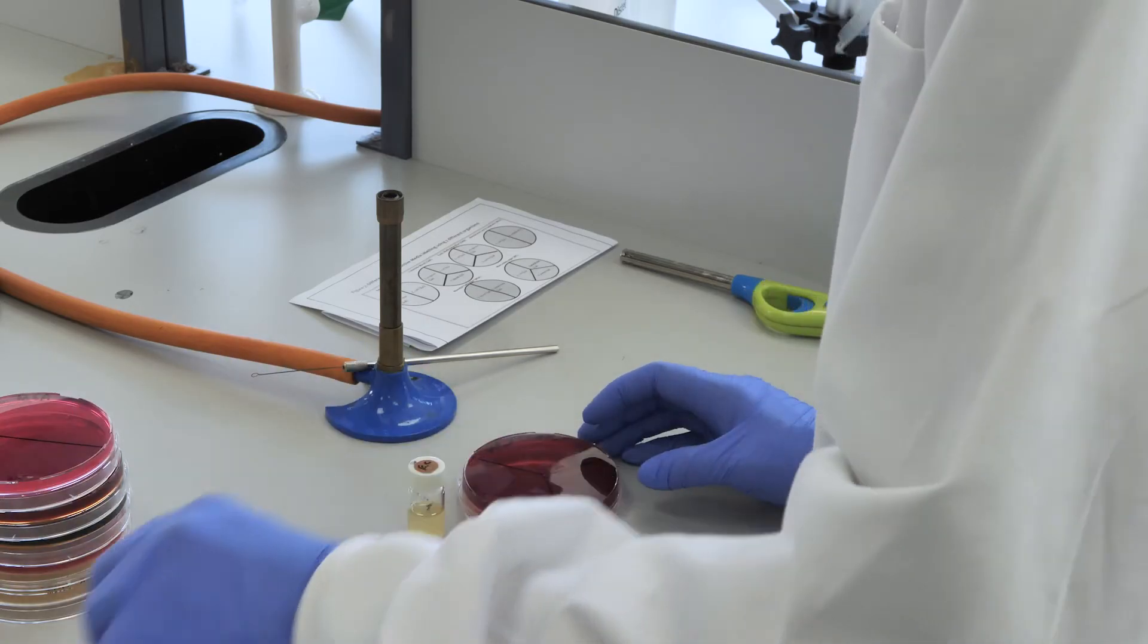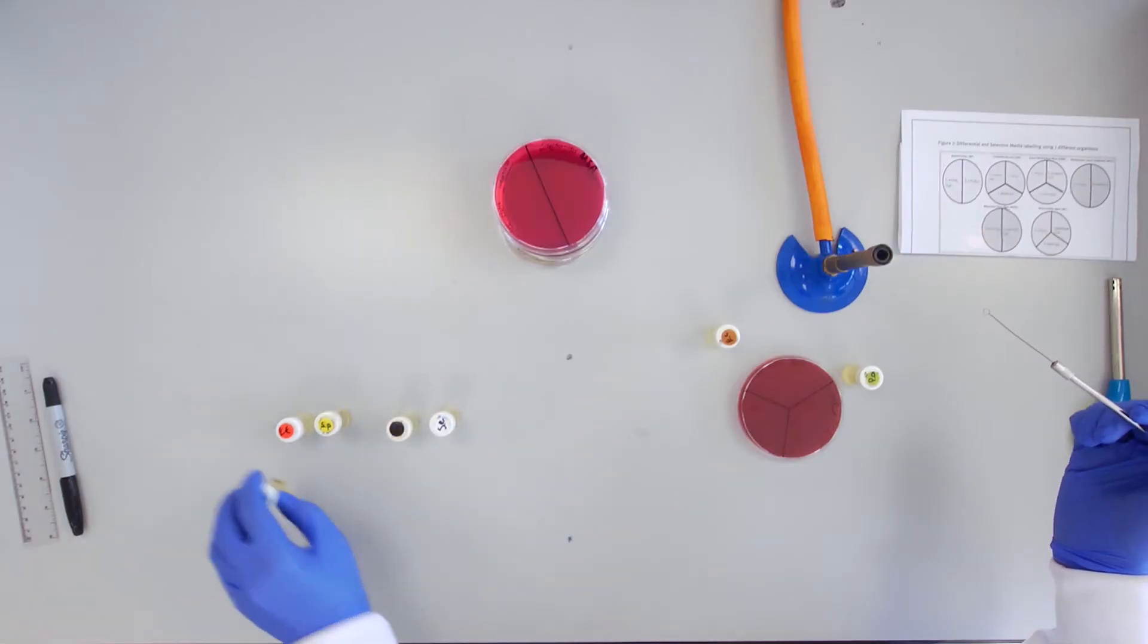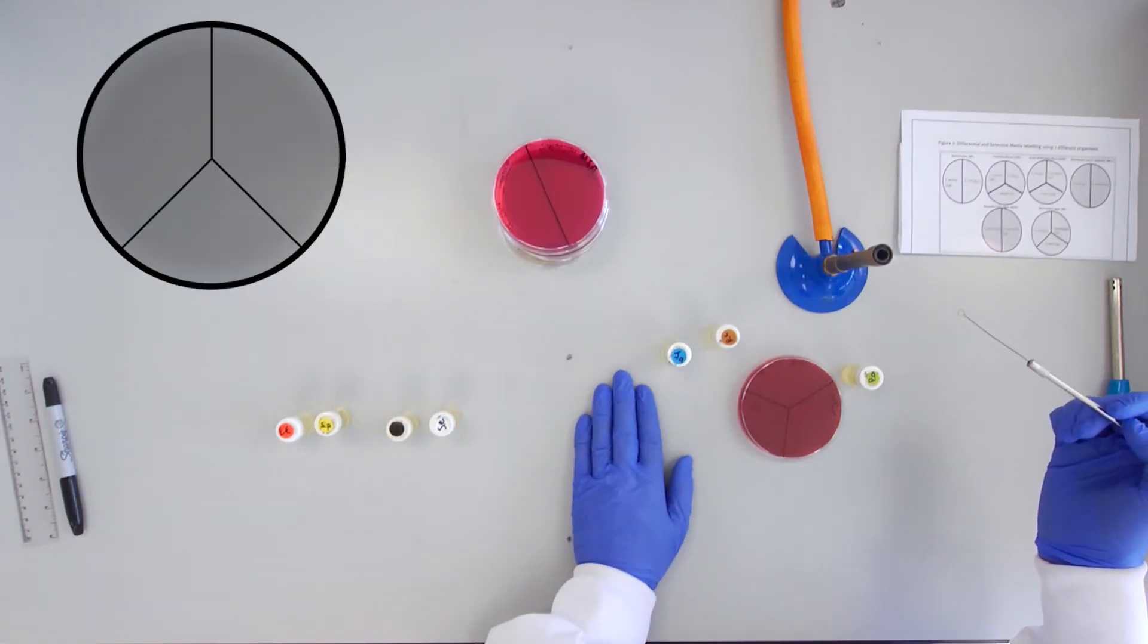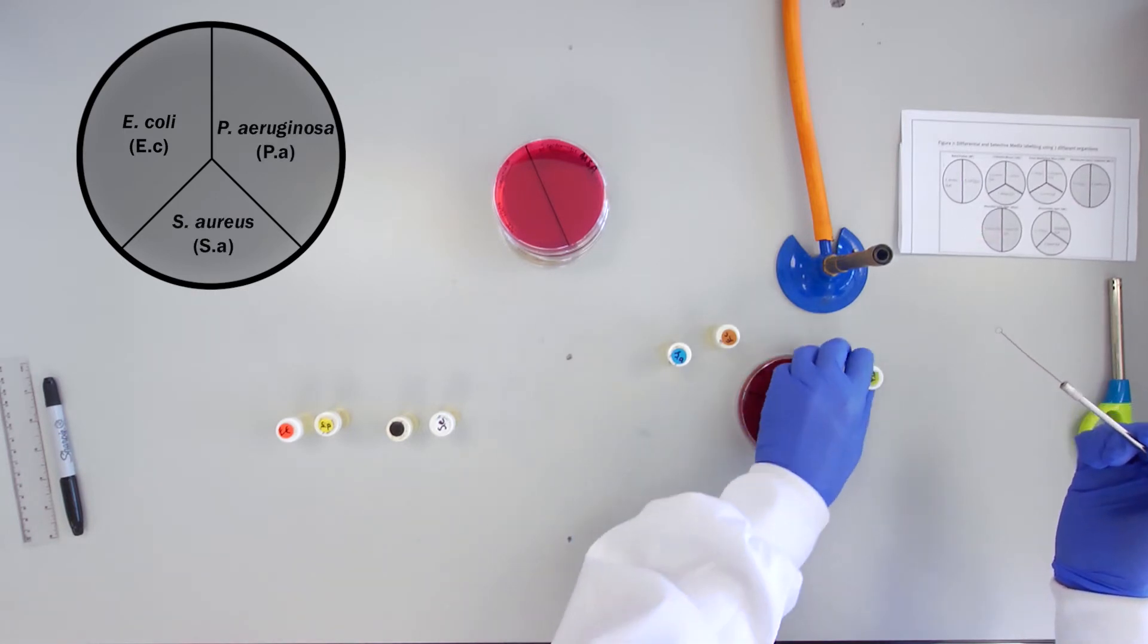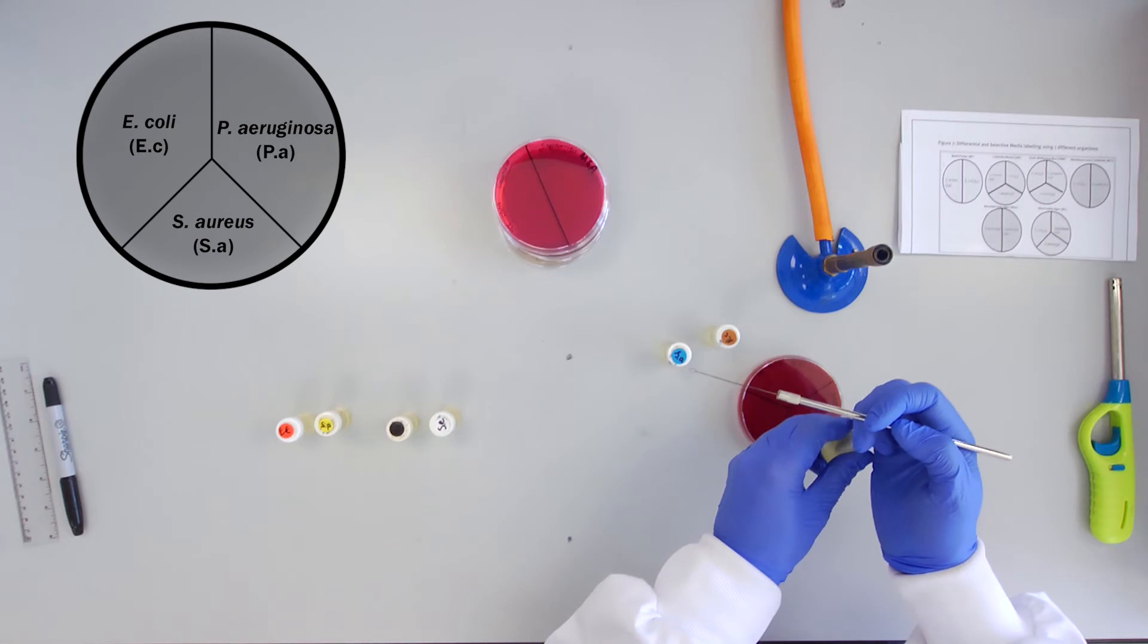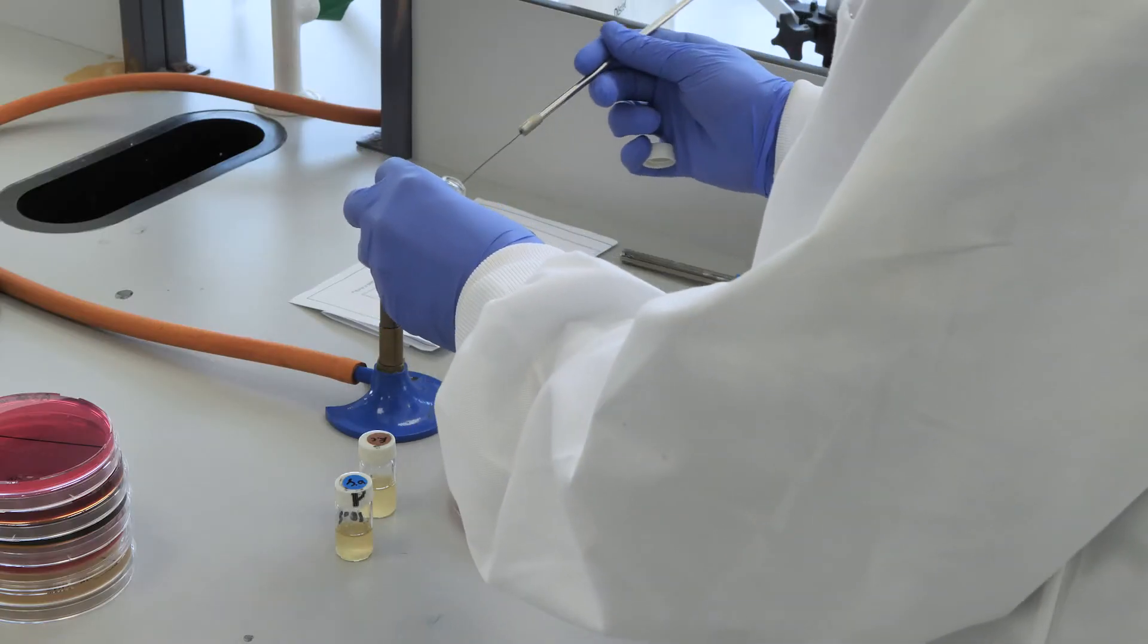The McConkey agar or MC is a deep red burgundy color and will be inoculated with E. coli, Pseudomonas aeruginosa, and Staphylococcus aureus.